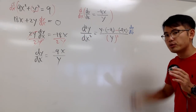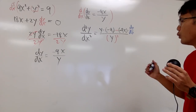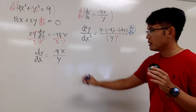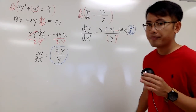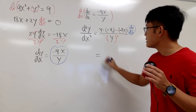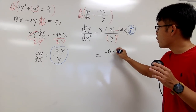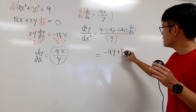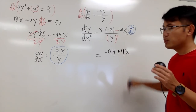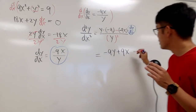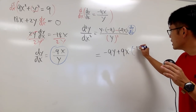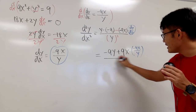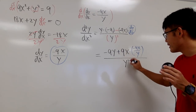Notice that dy/dx here is just the first derivative, which we already know. So we substitute: the expression becomes negative 9y — and negative times negative becomes positive — plus 9x times dy/dx, which is negative 9x over y. All of this is divided by y squared.